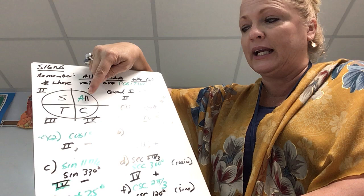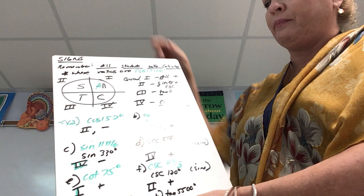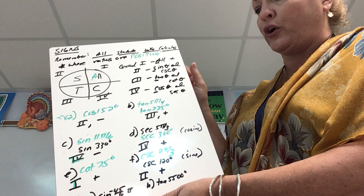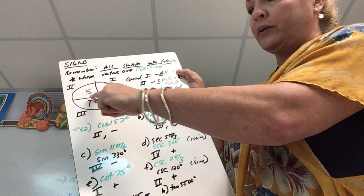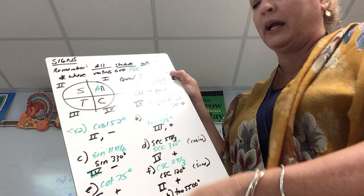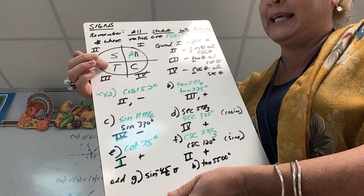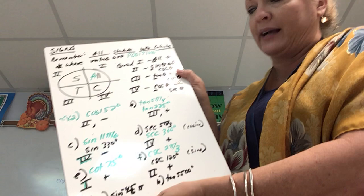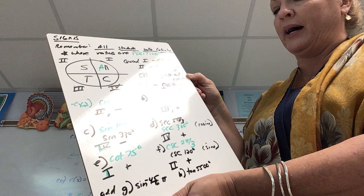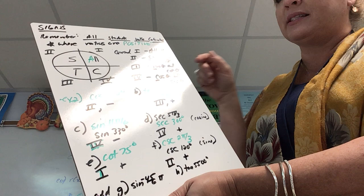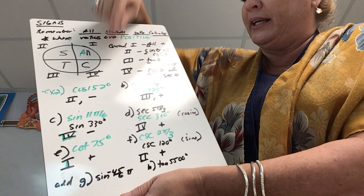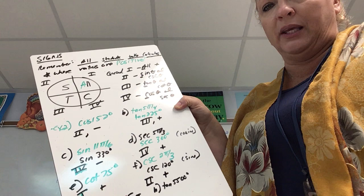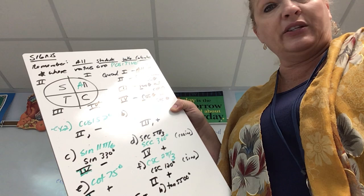In quadrant one, 'A' stands for All — every trig function is positive. That makes sense because x and y are both positive. In quadrant two, 'S' stands for Sine (and its partner cosecant) — because y is positive and x is negative, only y/hypotenuse ratios are positive. In quadrant three, 'T' stands for Tangent (and cotangent) — both x and y are negative, and a negative divided by a negative is positive. In quadrant four, 'C' stands for Cosine (and secant) — x is positive, y is negative.